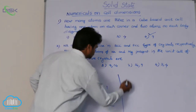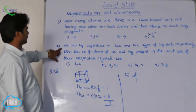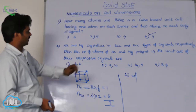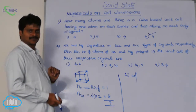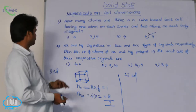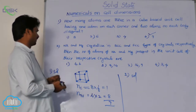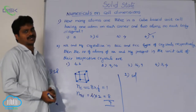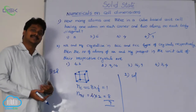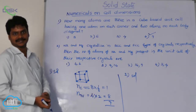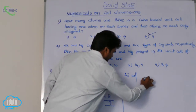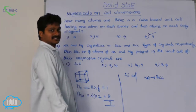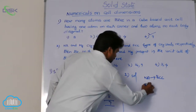See the solution for the second question. Read the question here: sodium and magnesium crystallize in BCC and FCC type of crystals respectively. Sodium crystallizes in BCC, whereas magnesium crystallizes in FCC. The number of atoms of sodium and magnesium present in their respective unit cells are asked — that means effective atoms per unit cell. Sodium is crystallizing in BCC.